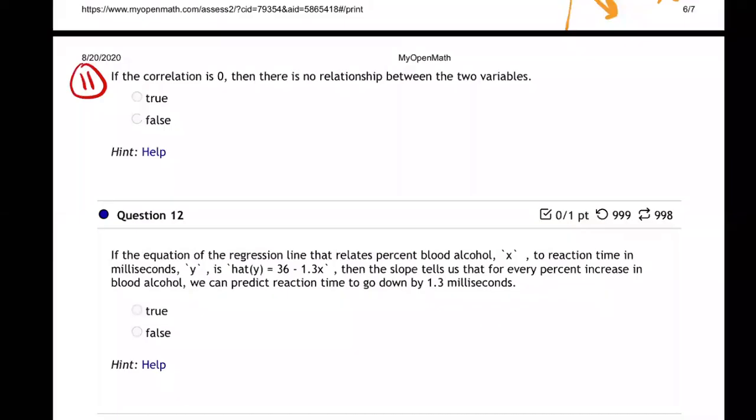All right, number 11 here. If the correlation is zero - and that should say linear correlation, they're not being very clear, I get these from other professors - if the linear correlation is zero, then there is no relationship between the variables.